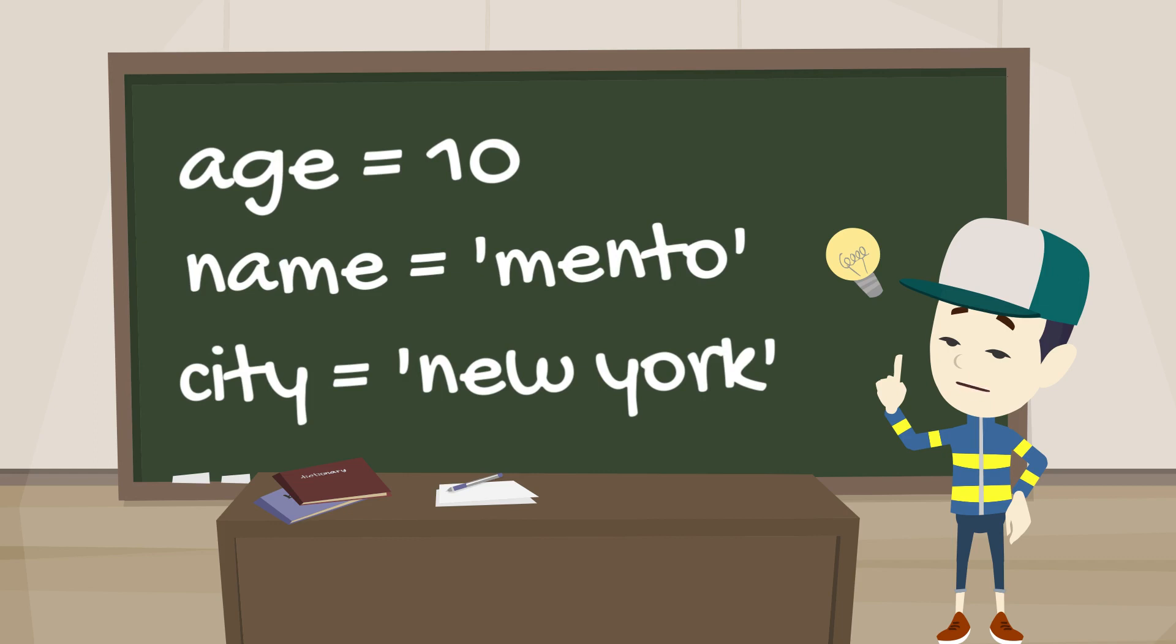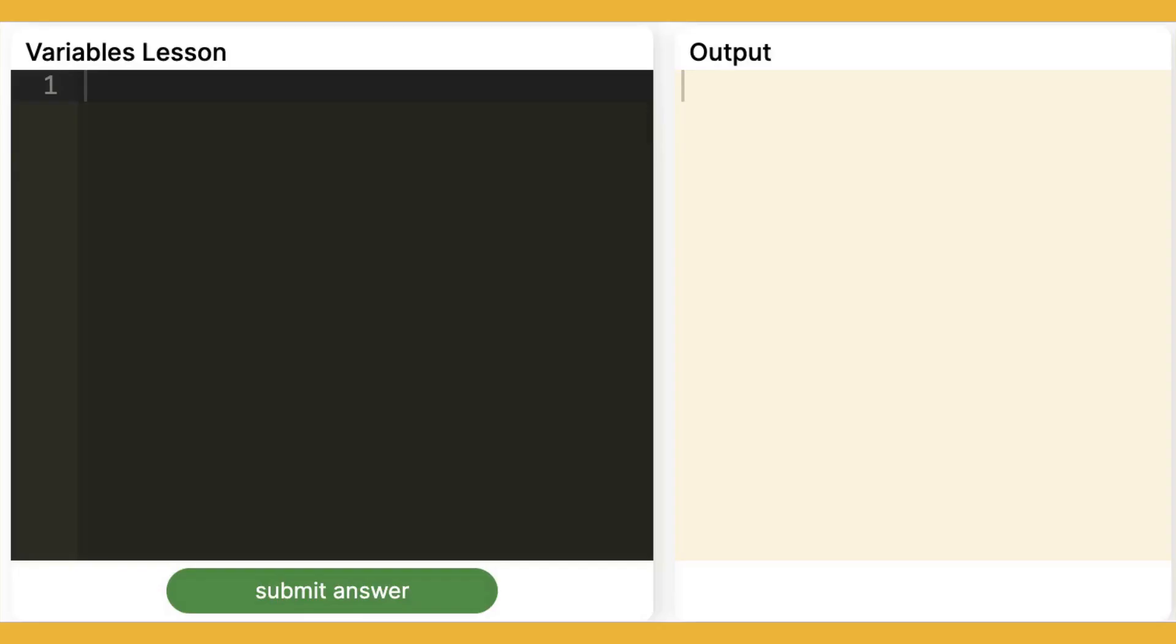Hey, I got it. I have some examples. Age is a variable and 10 is a value. Name is a variable and mento is a value. City is a variable. New York is a value.